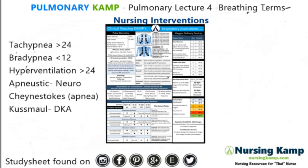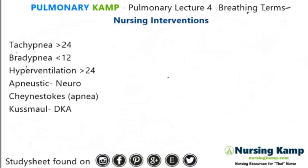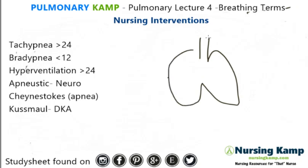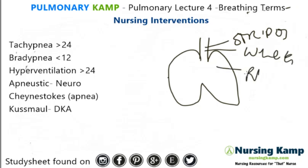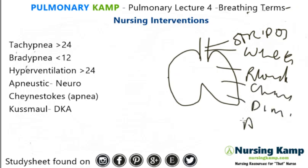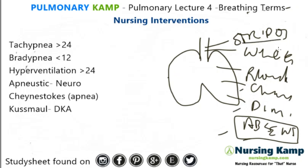In my previous lecture I talked about breathing and listening to breath sounds. Breath sounds are very important because it's all about location. We talked about how in the upper airway it's stridor, then it goes to wheezes, then ronchi, crackles, diminished, and then absent. Please see my pulmonary lecture number 3 where I talk about each of these conditions and their underlying causes.